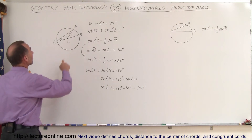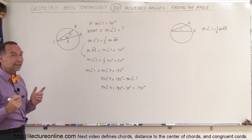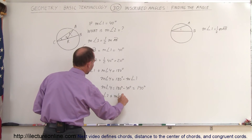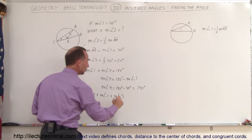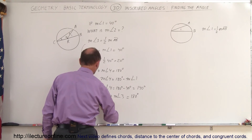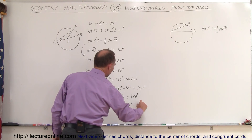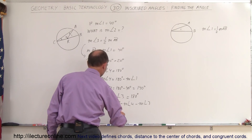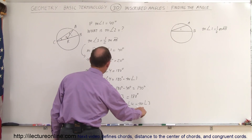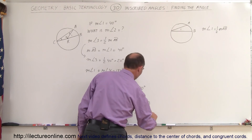Now we only need to find the measure of angle 2. It's inside the triangle, and the angles of a triangle must add up to 180 degrees. So angle 4 plus angle 2 plus angle 3 equals 180 degrees. Solving for angle 2: it equals 180 minus 140 minus 20, which gives us 180 minus 160, which is 20 degrees.